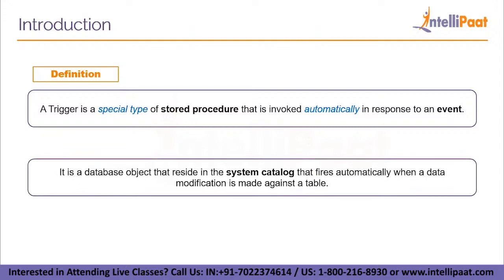Here is an alternative definition: a trigger is a database object that resides in the system catalog and fires automatically when a data modification is made against a table — that is, when an event occurs. Whenever we create something in a database — be it a table, a view, a trigger, or a stored procedure — it is called a database object. The system catalog, also called a data dictionary, is a place where metadata is stored, such as data types, table names, and attribute names. A trigger will be stored in the system catalog and fired whenever necessary.